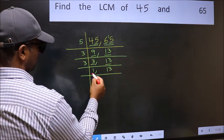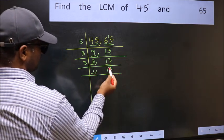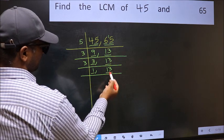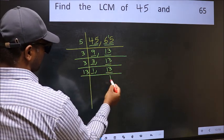Now we got 1 here, so focus on the next number 13. 13 is a prime number, so 13 once 13.